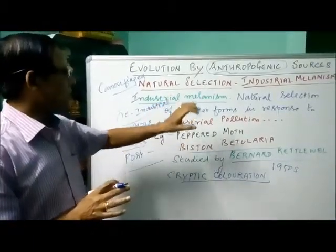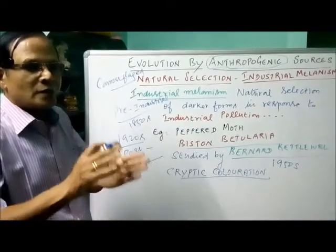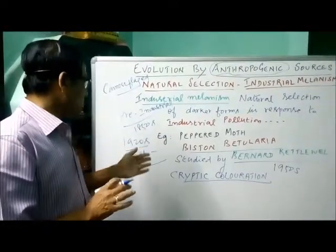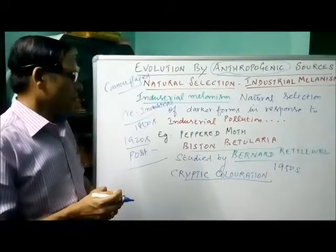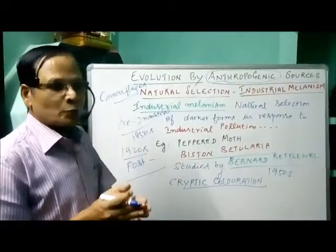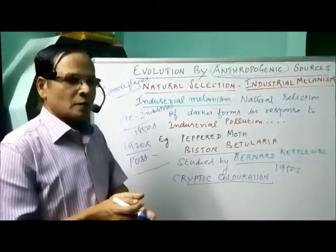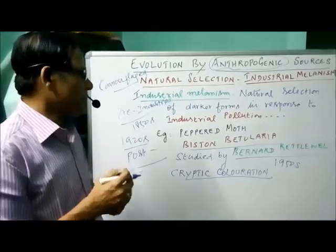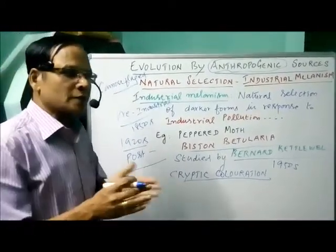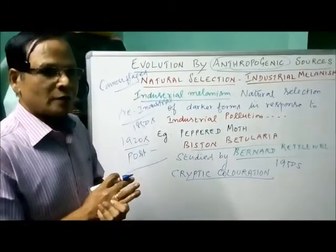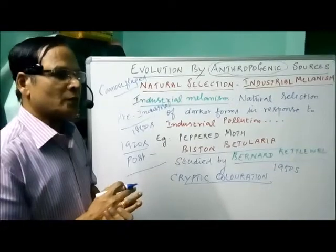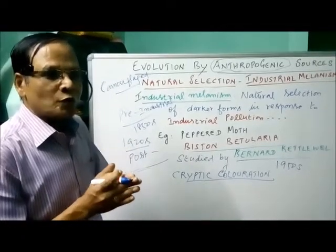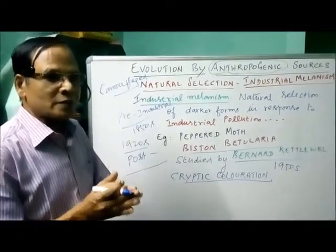Simply, industrial melanism is defined as the natural selection of darker forms, or the evolution of darker forms in response to industrial pollution. After the 1950s, an amendment was made in the English Parliament to reduce industries. Because of the reduction in industries, the release of soot and smoke decreased. Automatically, the environment returned to its normal conditions.